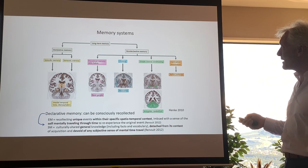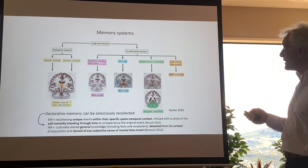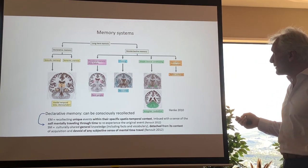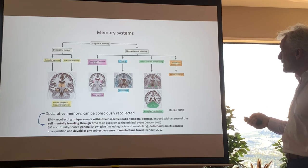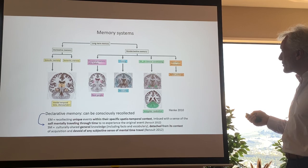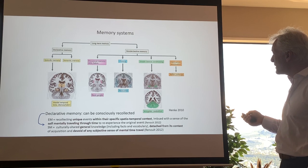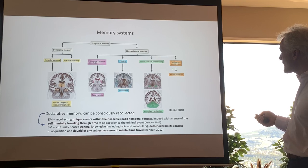Memory systems have been subdivided into different classes. There is declarative memory, which comes in two forms: episodic memory and semantic memory. There is also non-declarative memory, which cannot be consciously recollected. This includes procedural memory — skills and habits — priming, which is cortically generated, simple classical conditioning involving the basal ganglia and amygdala, and the cerebellum, as well as habituation and sensitization.